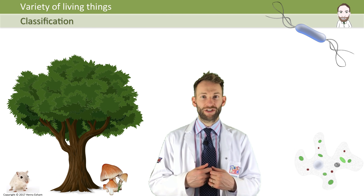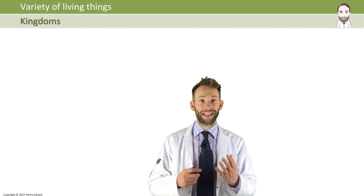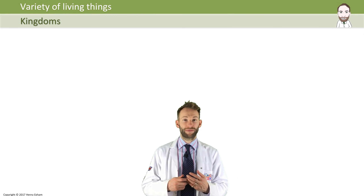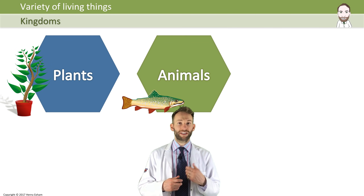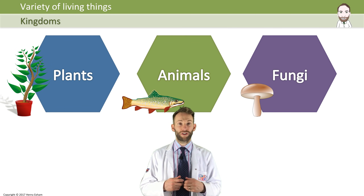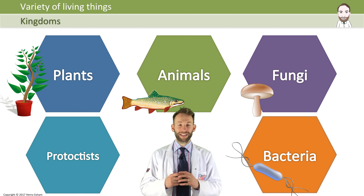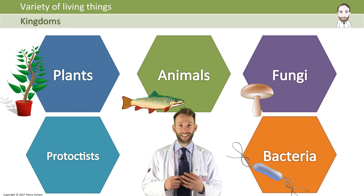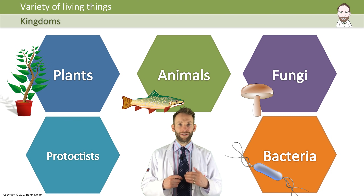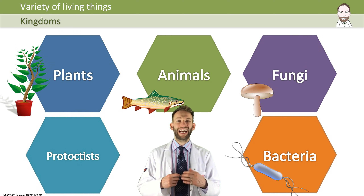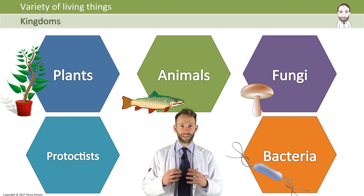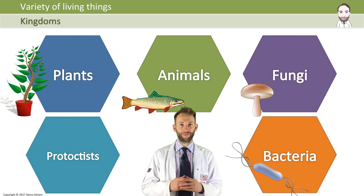One of the simplest forms of classification is to split living organisms into five different kingdoms. The kingdoms are animals, plants, fungi, protoctists, and bacteria. In this presentation, we're going to go through each of these five kingdoms and look at the common characteristics that they have, which allow an organism to be classified into that particular kingdom.